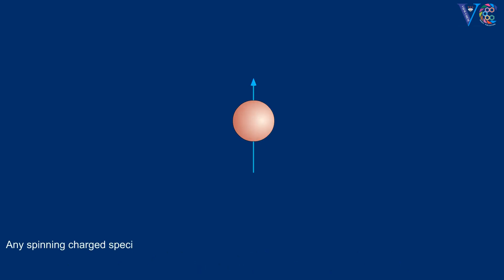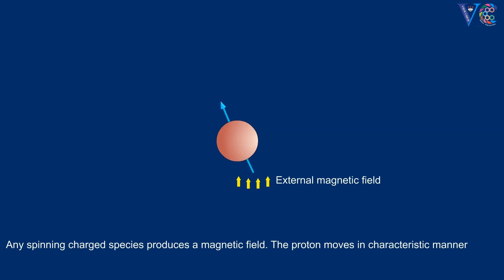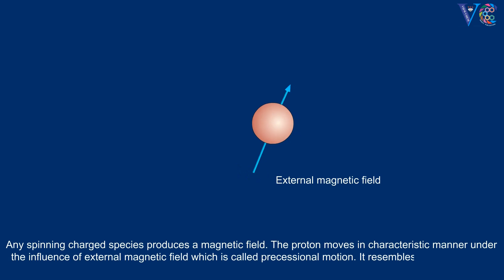Any spinning charged species produces a magnetic field. The proton moves in characteristic manner under the influence of external magnetic field which is called precessional motion. It resembles the spinning top which performs a slow waltz-like motion.